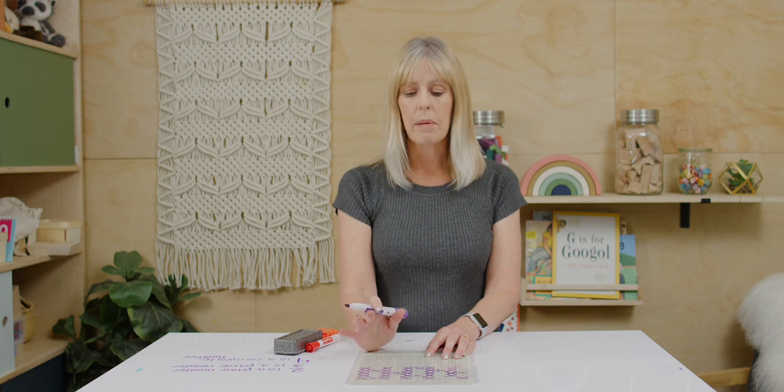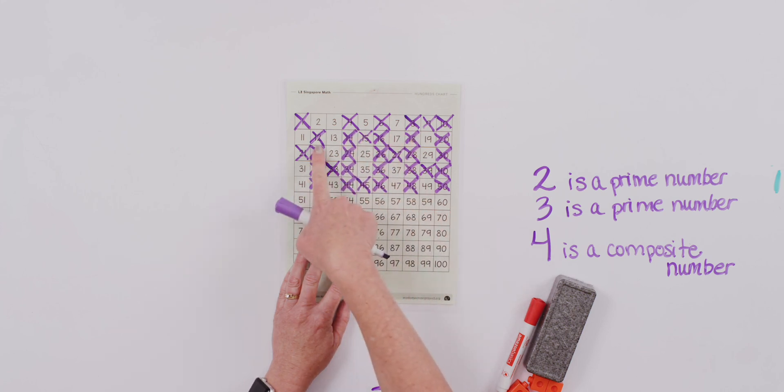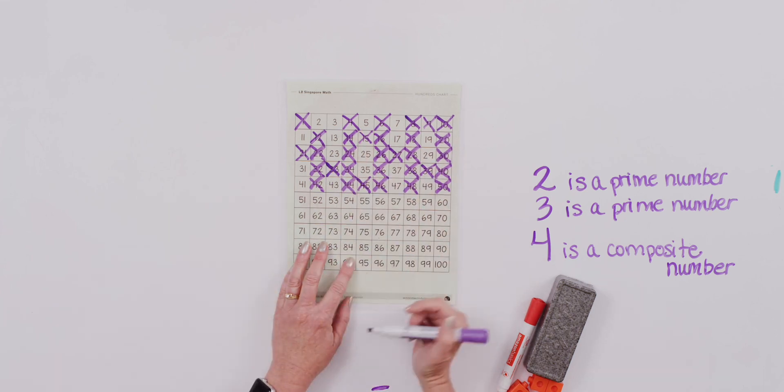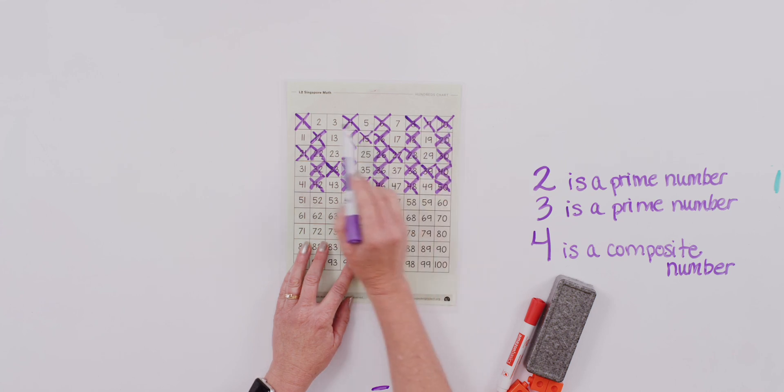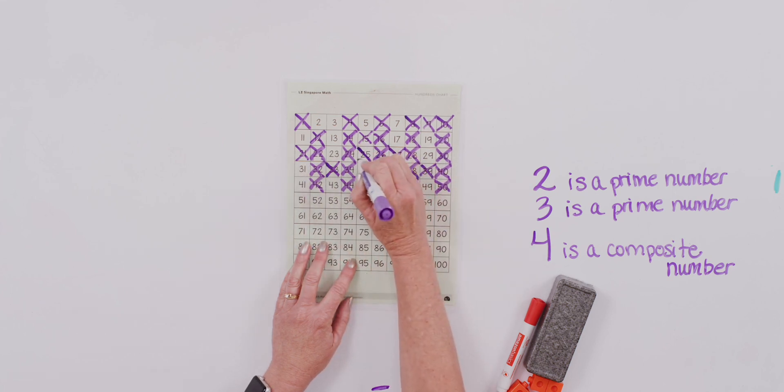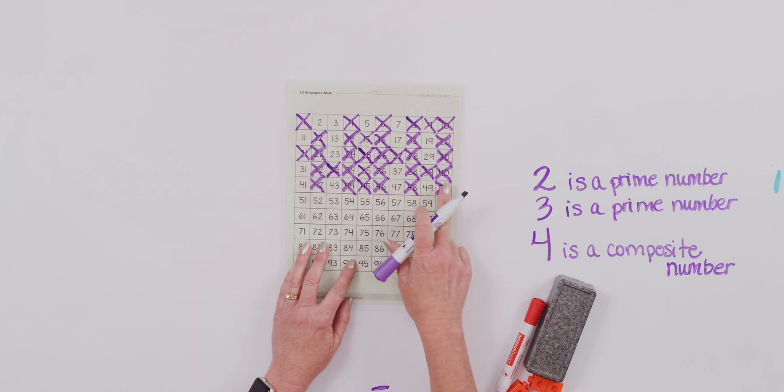Now when we look at our 4s, I already have it crossed off. So we already know it's not prime. Do you think any multiples of 4 would be prime then? No. 4, 8, 12. As you notice, we already have them all crossed off. So we don't have to do anything with our 4s. How about our 5s? 5, we leave alone. 10 is not prime, we already crossed that off. 15, we did. 20. We haven't crossed off 25 yet. 30, 35, 40, 45, and 50.